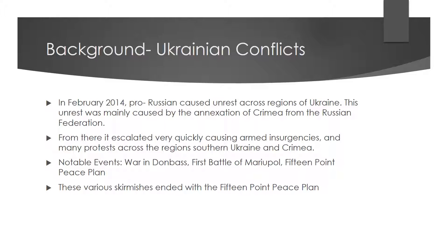For the background of the Ukrainian conflicts, it started in 2014, beginning in early February when pro-Russians caused unrest across the southern region of Ukraine in Crimea. The public opinion in participating areas such as Crimea, Donetsk Oblast, Luhansk Oblast, Odessa Oblast, Zaporizhia Oblast, Kharkiv Oblast, and Dnipropetrovsk Oblast was either to have a union or to not have a union.